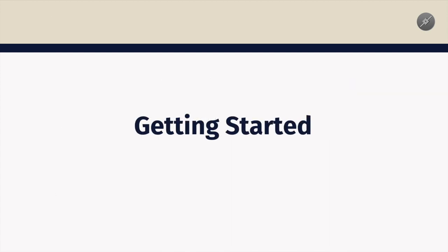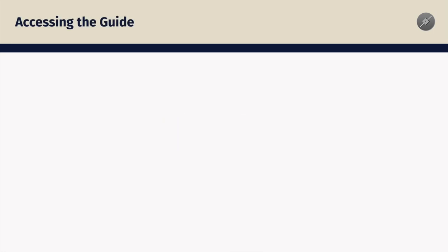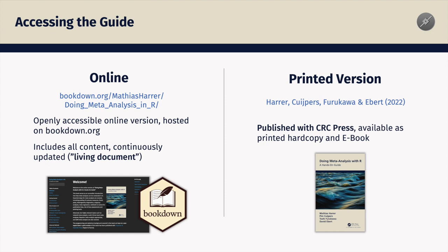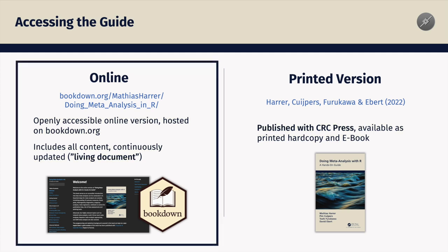Here's how you can start working with the guide. There are generally two ways to access the contents. The first option is to use the online version, which can be found openly accessible on bookdown.org. This version contains all the content and it is a living document — it is regularly updated to reflect software changes and new findings in the literature. Alternatively, you can also purchase a hard copy of the guide, which has been published with CRC Press. In this video, we'll be focusing on how to get started using the online version of the guide.